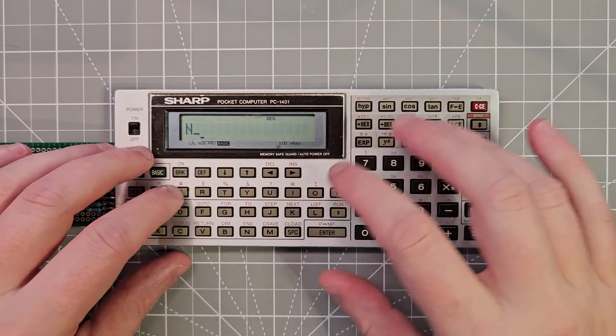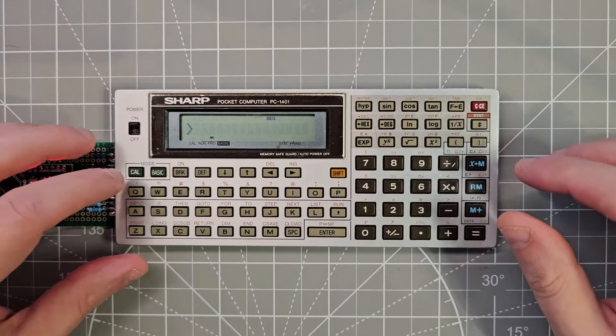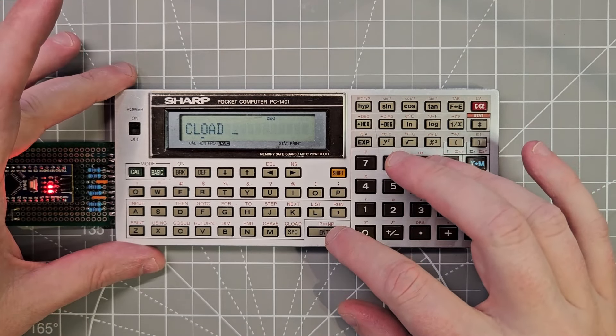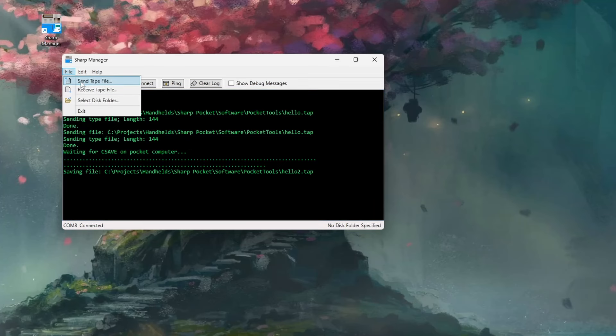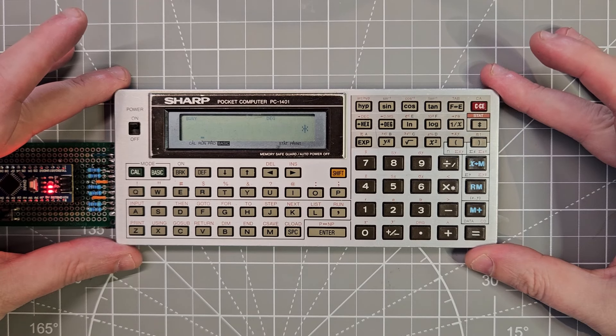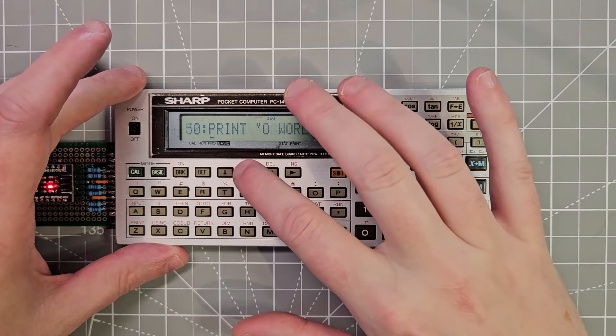And now it's saved. So now we can come back here and I'm just going to clear out the memory. So we got no program on there anymore. And let's go back and we'll just CLoad the file that we just saved. And you can see our program is back.